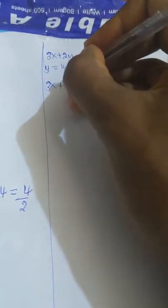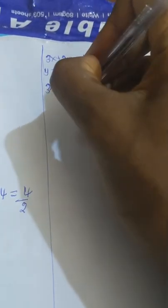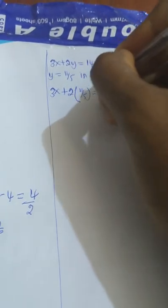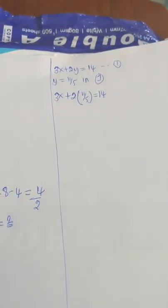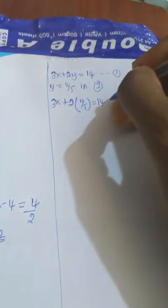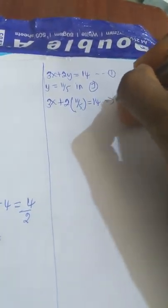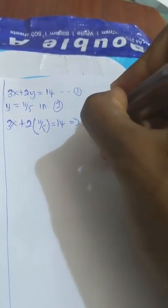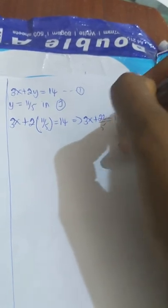Equation one here is 3x plus 2y equal to 14. Substituting y equal to 11 over 5 into equation one, we have 3x plus 2 times 11 over 5 equal to 14, which gives 3x plus 22 over 5 equal to 14.